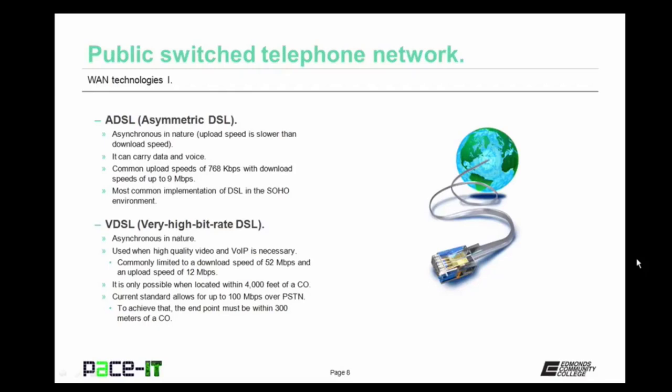Last up for DSL is VDSL — Very High Bit Rate DSL. It's asynchronous in nature as well, and is used when high quality video and voice over IP is necessary. VDSL is commonly limited to download speeds of 52 megabits per second with an upload speed of 12 megabits per second — much faster than ADSL. But VDSL is only possible when you're located within 4,000 feet of a central office.